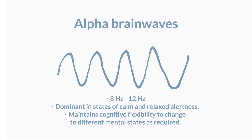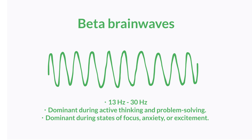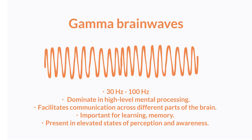Blue — Alpha brainwaves. They dominate in states of calm and relaxed alertness, where the brain conserves energy while maintaining cognitive flexibility to change to different mental states as required. Green — Beta brainwaves. These dominate during active thinking and problem solving, and also during states of focus, anxiety, or excitement. Orange — Gamma brainwaves. These dominate in high-level mental processing and are important to learning and memory.